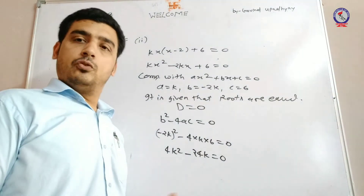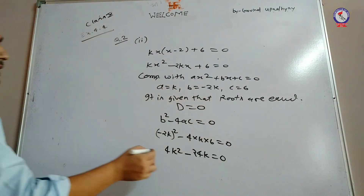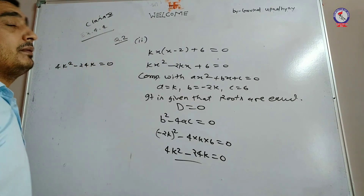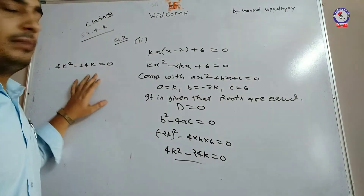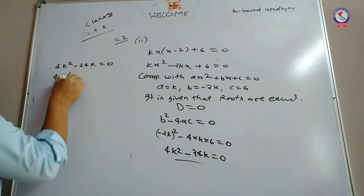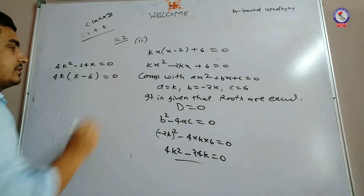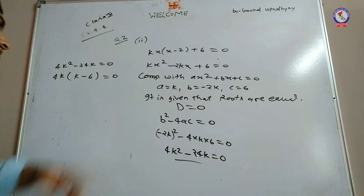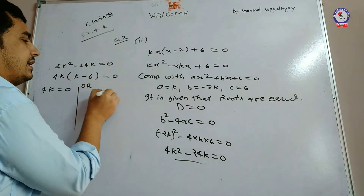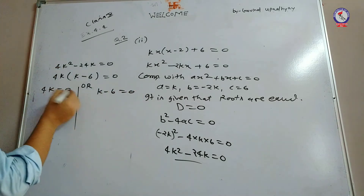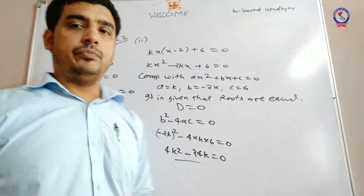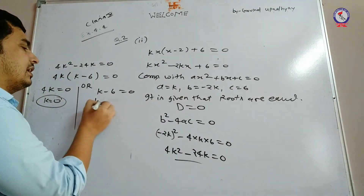Solve करते हैं: 4k squared minus 24k is equal to zero. इन दोनों में से common देखते हैं — 4k common है, साथ में 4 जो है वो 24 का factor है। 4k common लिया, तो यहाँ बचा k minus 6. Either 4k is equal to zero, या k minus 6 is equal to zero। तो k is equal to zero, या k is equal to six.